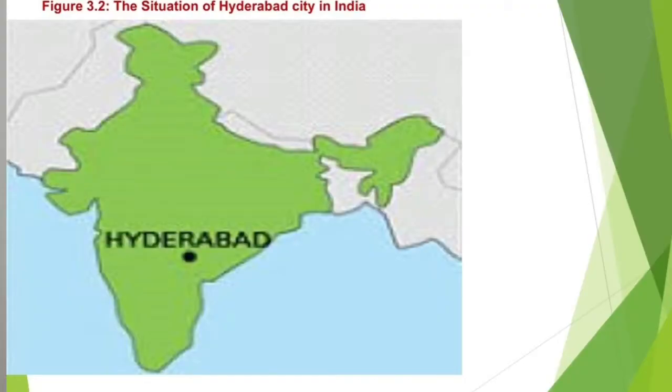Site means where the object is exactly located. For example, the site of Hyderabad is on the bank of the river Musi. The situation denotes the location of an object in relation to others. For example, Hyderabad city is situated in South India. We can explain site and location with figures that appear on the screen. In general, there are two ways to describe location: absolute location and relative location.